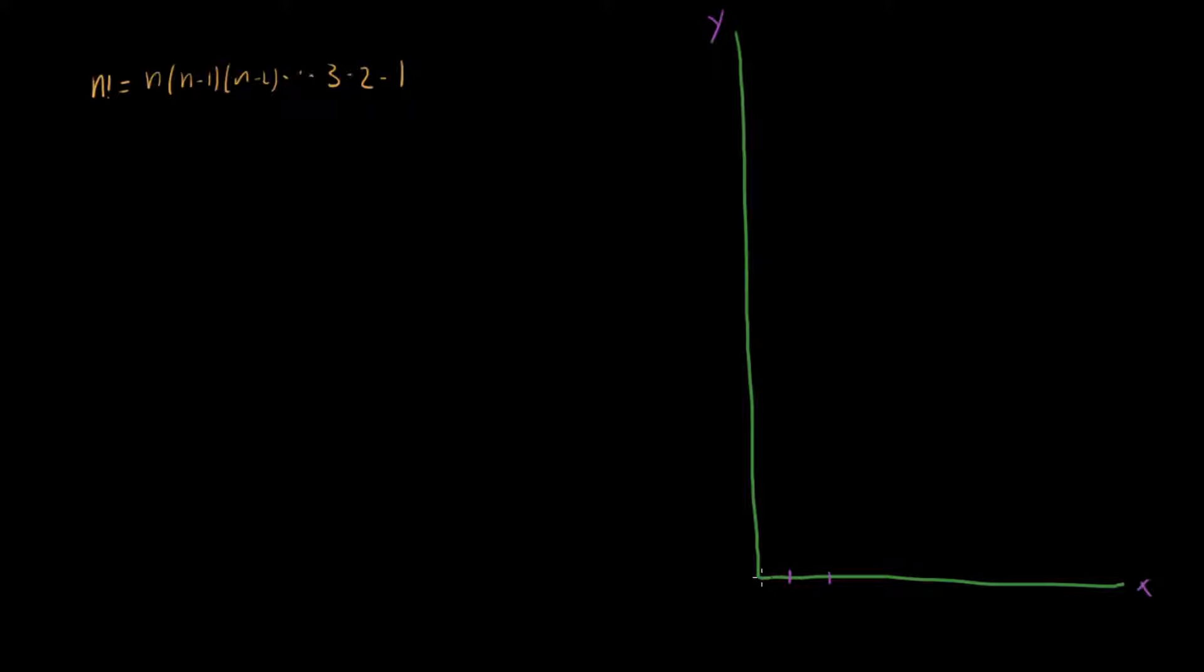We know that 1 factorial is 1. We know that 2, because 1 times everything down to 1 is just 1. 2 factorial, that's 2 times 1, so that's 2.